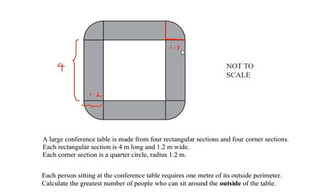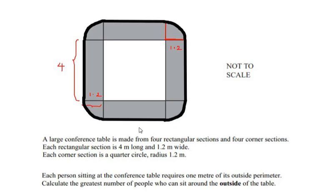The radius of each quarter circle is 1.2 meters. Each person sitting at the conference table requires 1 meter of its outside perimeter. The bold outline shown represents the outside perimeter, so each person needs 1 meter of space around the conference table.